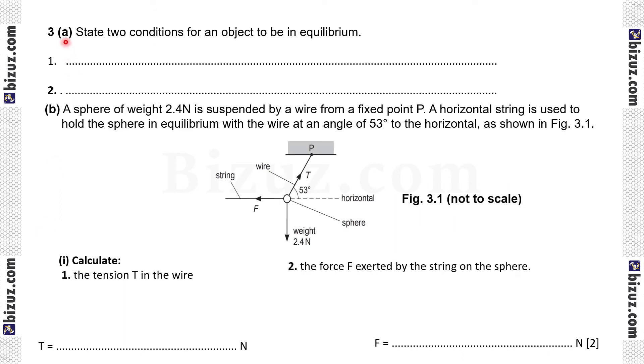Question 3a, state two conditions for an object to be in equilibrium. Condition 1, resultant forces in any direction is 0. That means sum of forces in any direction is equal to 0. Number 2, resultant torque or moment about any point is 0. That means sum of clockwise moment must be equal to sum of anti-clockwise moment.